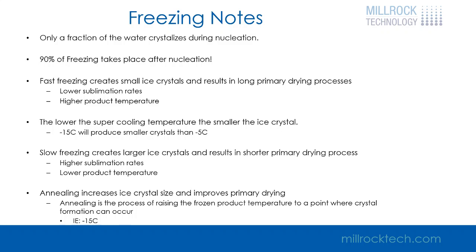Fast freezing — if we drop our shelf temperature extremely quickly — creates small ice crystals. The result is a long primary drying process because the ice crystals are smaller. The vapor has a hard time escaping from the product, so we get lower sublimation rates and higher product temperatures during primary drying.